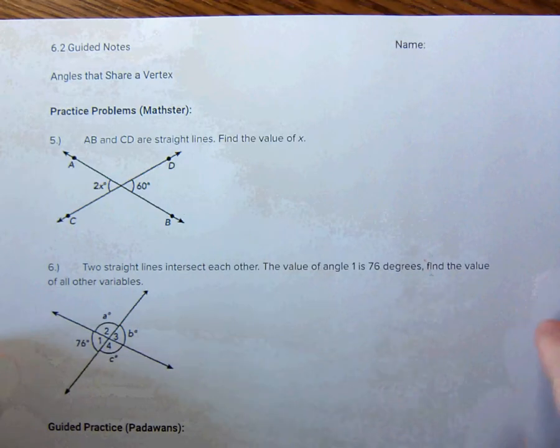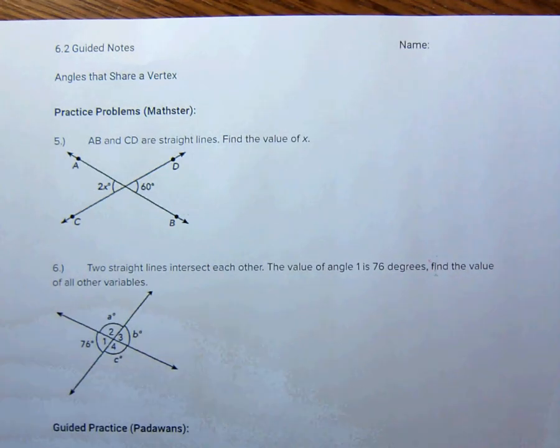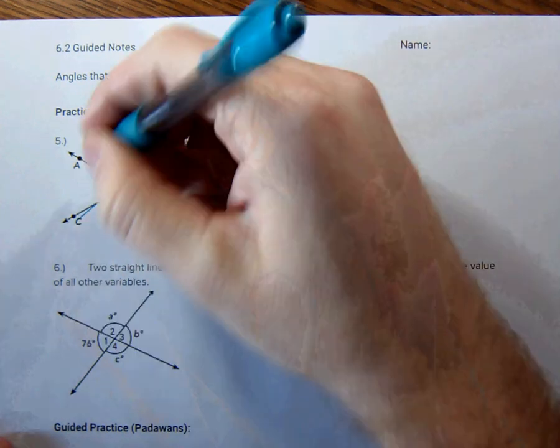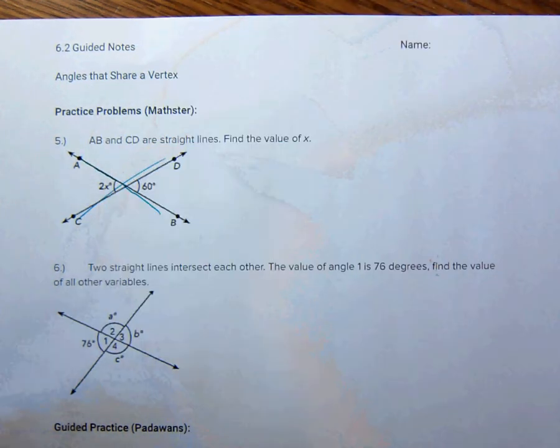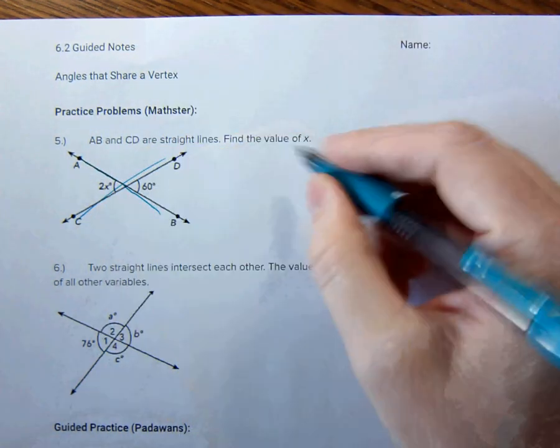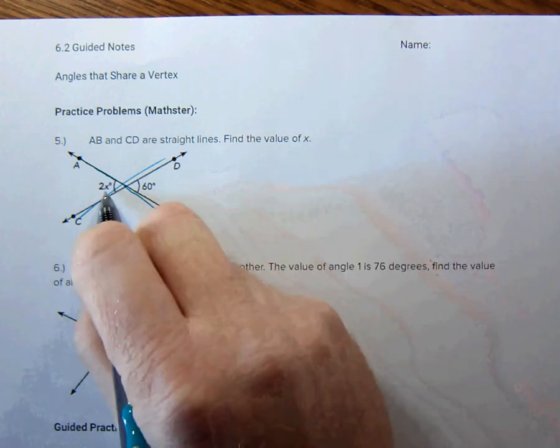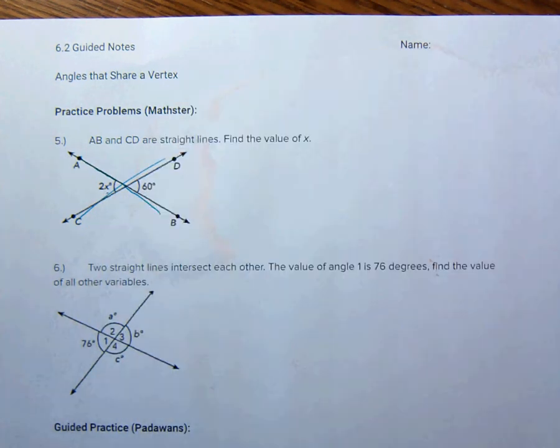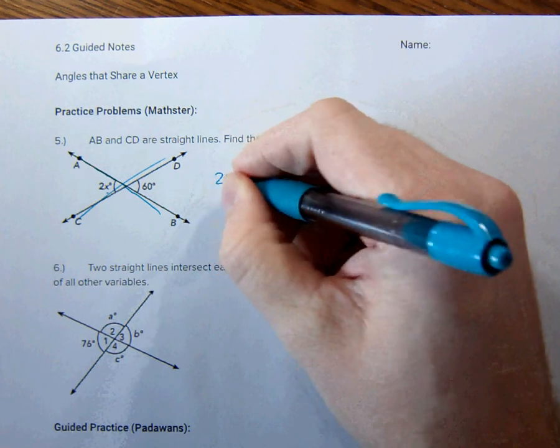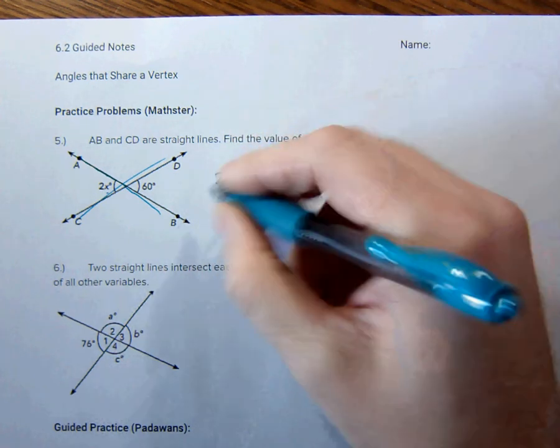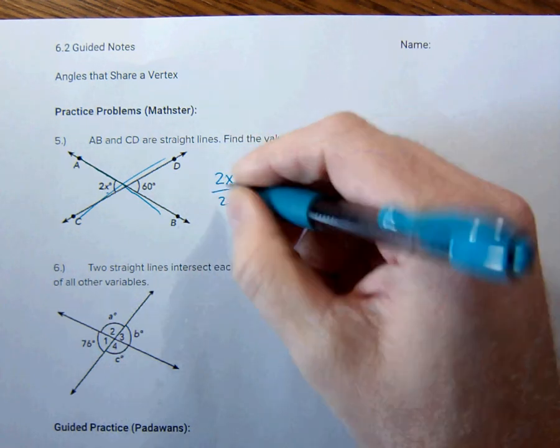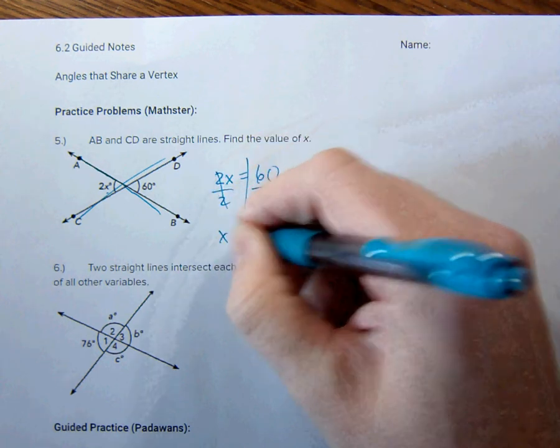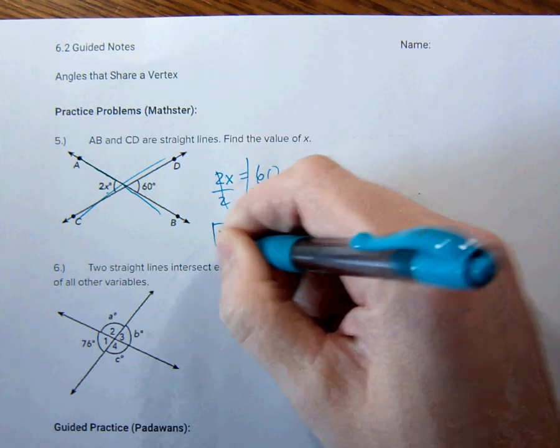So we do that one. And then, here. A, B and C, D are straight lines. That's great. Straight lines. So this is a straight line. That's a straight line. They meet at a vertex. Find the value of x. So that means that they're equal to each other, because they're vertical. So 2x is equal to 60. Find the value of x. Divide by 2. Divide by 2. X is equal to 30. That one was really easy.